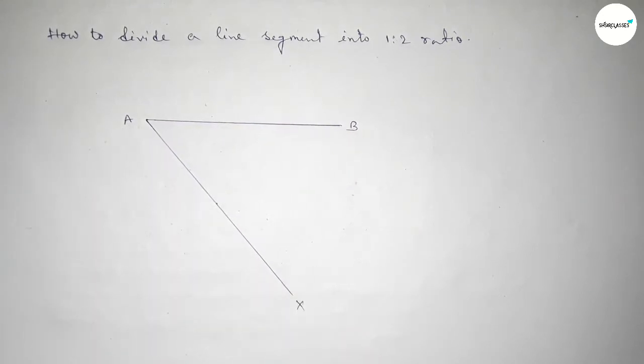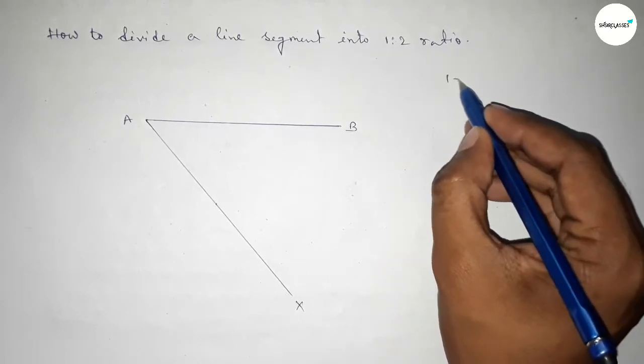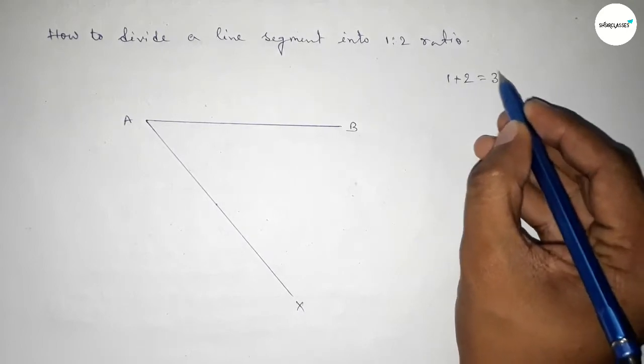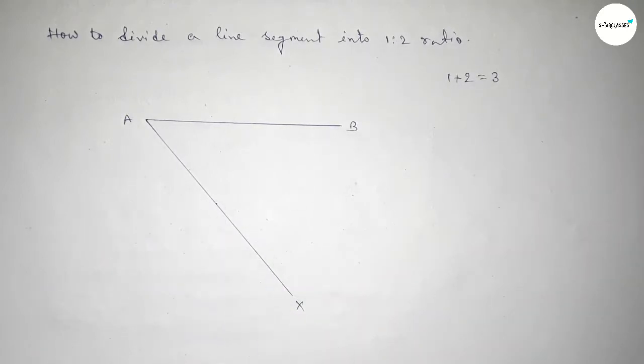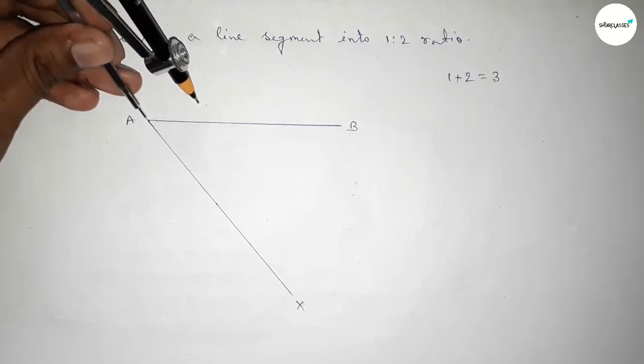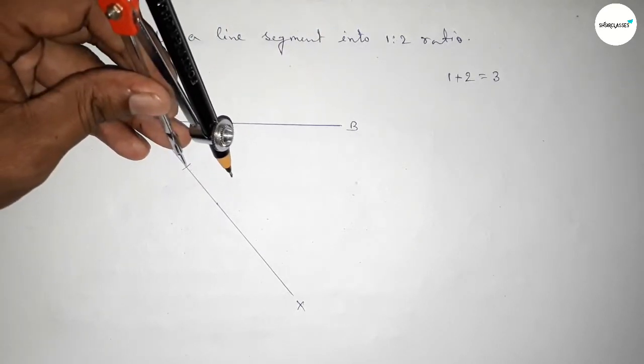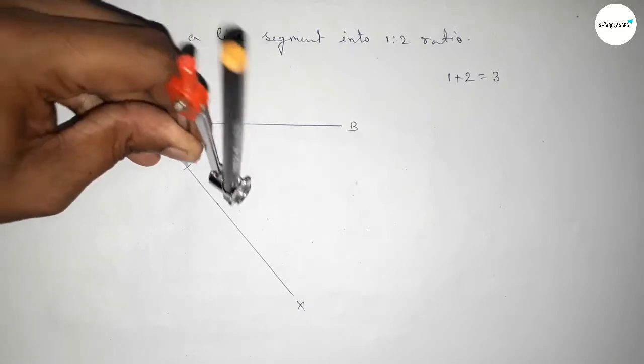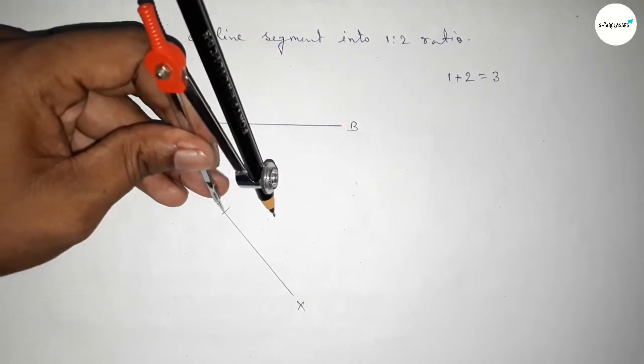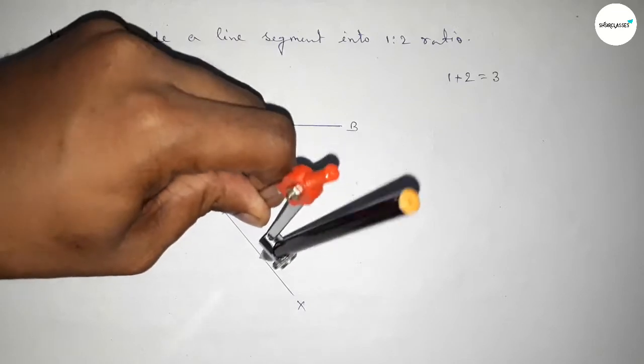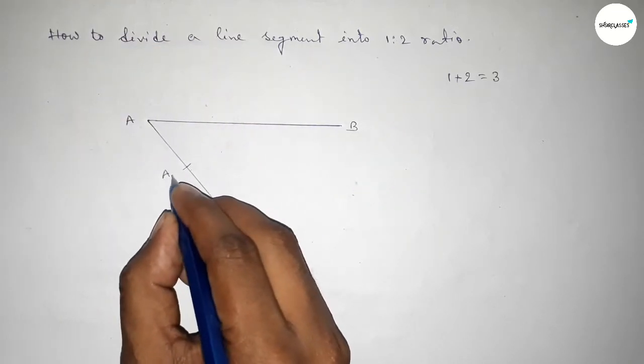Now we have to calculate: 1 plus 2 equal to 3, so we should mark 3 points. Taking any length and cutting here with same length, putting the compass here and cutting here with same length, putting the compass here and cutting here. So we mark three points here: A1, A2, and A3.